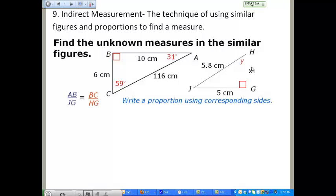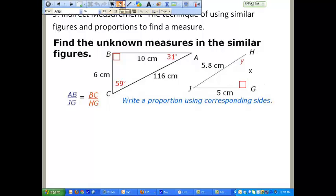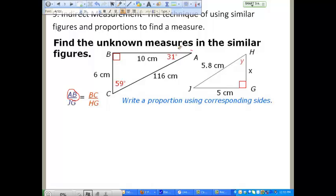First thing we're going to do is write a proportion using corresponding sides. You can see that in doing that I've got side AB, that is this side right here, corresponds to side JG, this side right here. And side BC, this one here corresponds to side HG, this one's here. How did I know that? I just kind of looked at it and I saw what they would correspond to.